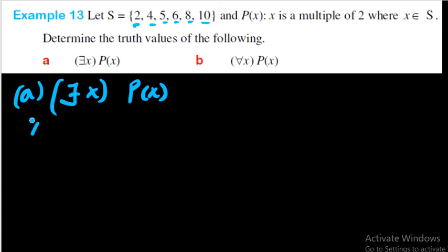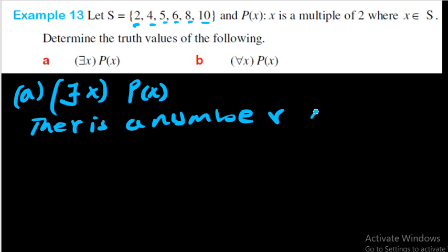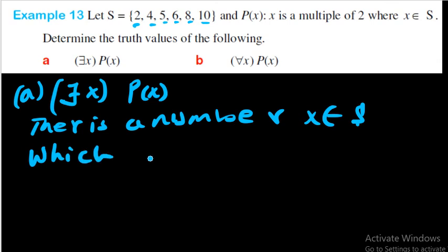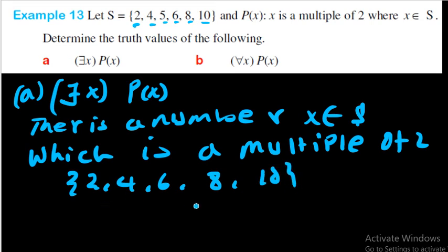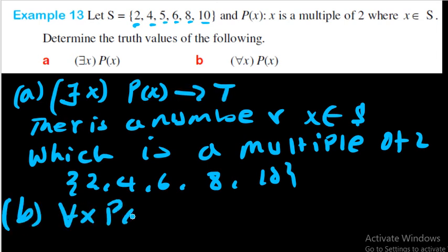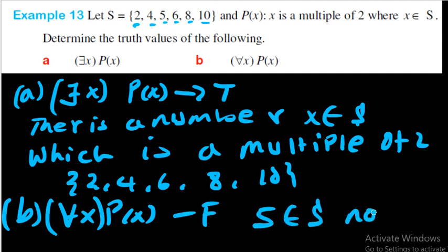Yes, of course — there are numbers like 2, 4, 6, 8, and 10 which are multiples of two, so this is true. But when you come to part (b), for all x, P(x) means every x taken from the domain must be a multiple of two. This is false because 5, which is an element of S, is not a multiple of two.